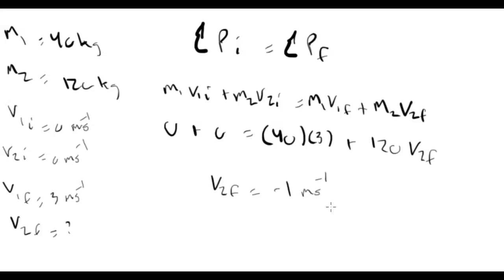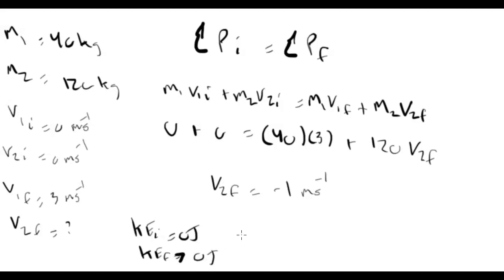Even though both skaters are moving after they push apart, the total momentum of the system is still 0 — because it was 0 before the push. However, the final kinetic energy is greater than 0, so this is a super-elastic collision.